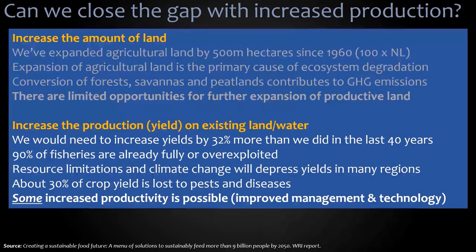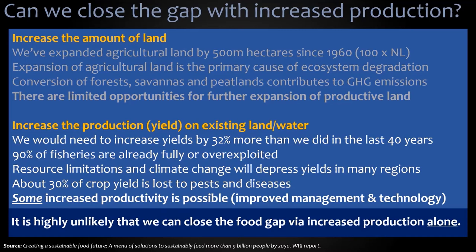We'd need to do even better in future than we have done in the past. We know that 90% of our fisheries are over-exploited or already fully exploited. Resource limitations and climate change will depress yields in many regions. Unfortunately, about 30% of our crop yield is lost to pests and diseases in the field. So whilst some increased productivity is possible through improved management and technology, it's highly unlikely that we can close the food gap via increased production on its own.